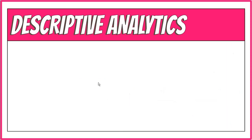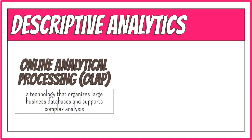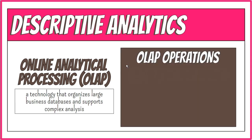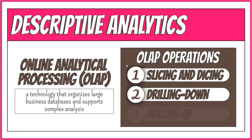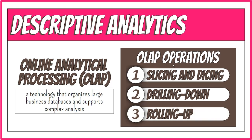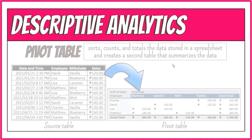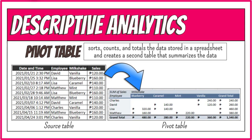Aside from charts, descriptive analytics reports can also be presented using a table. For example, this is how information is viewed in an online analytical processing, or OLAP, system. An OLAP system can be used to perform complex analytical queries without negatively affecting transactional systems. To demonstrate slicing, dicing, drilling down, and rolling up — which are common operations in an OLAP system — let's use the pivot table. A pivot table sorts, counts, and totals the data stored in a spreadsheet and creates a second table that summarizes the data.